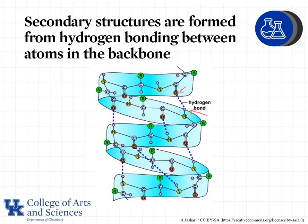Notice there are many amino acids between those interacting atoms, and that's how we get the alpha helix or the beta-pleated sheet. We see lots of different interactions, and that's what holds this shape — hydrogen bonding between atoms in the backbone holding the secondary structure.